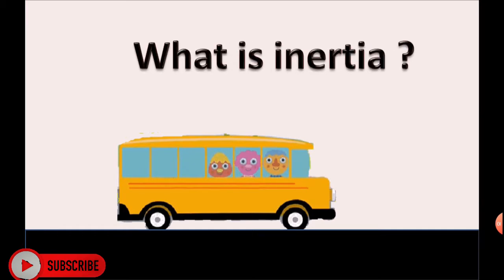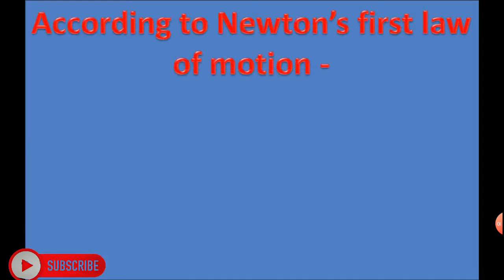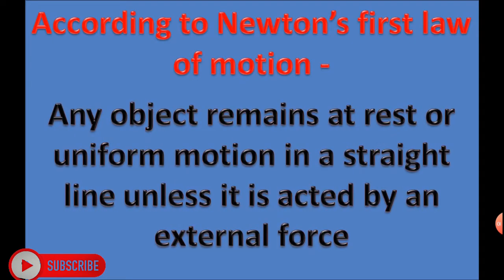What is inertia? According to Newton's first law of motion, any object remains at rest or uniform motion in a straight line unless it is acted by an external force.